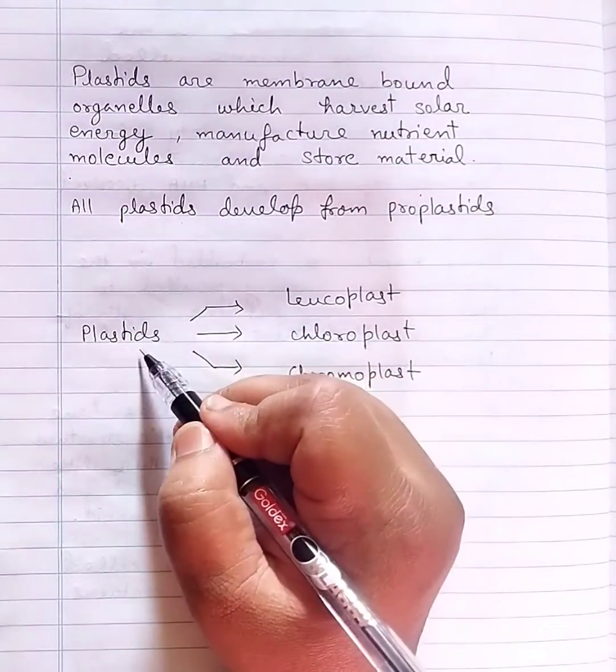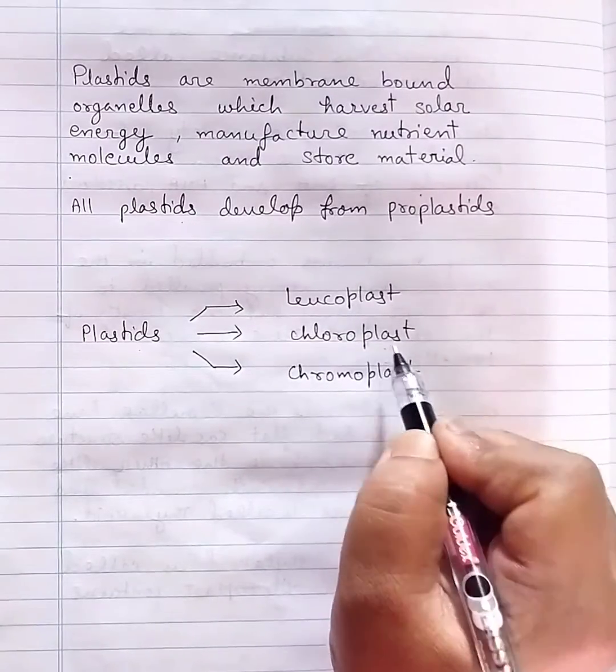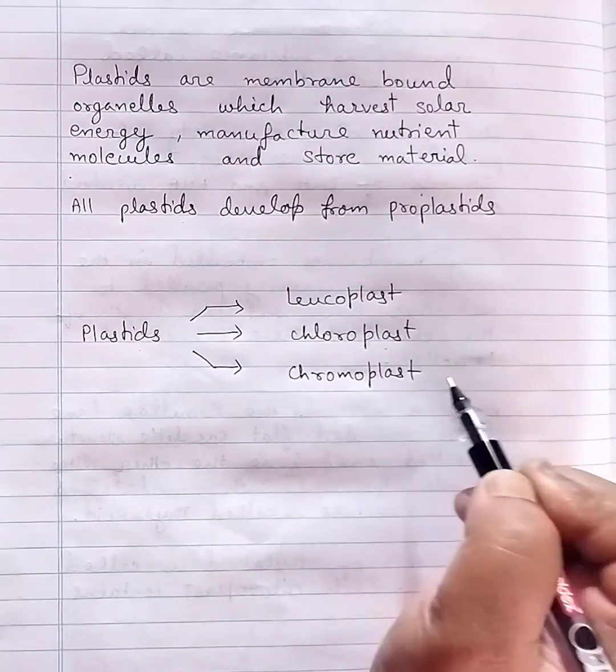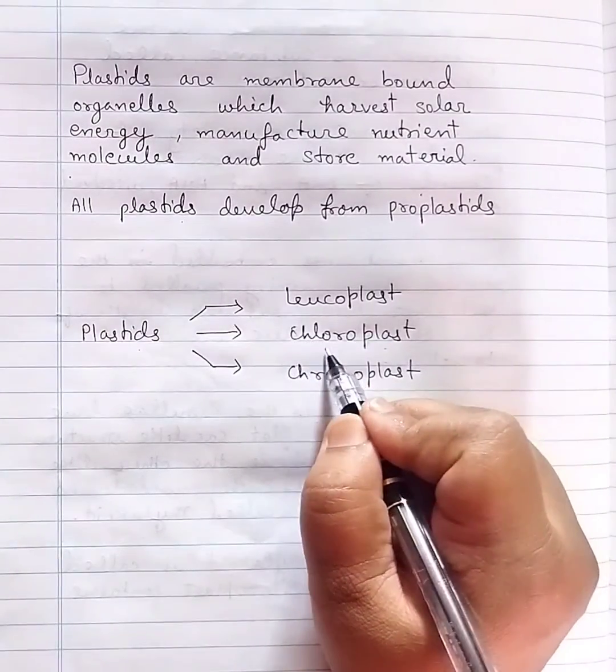All plastids develop from proplastids. Plastids are of three types: leucoplast, chloroplast, and chromoplast. Now we are talking about chloroplasts.